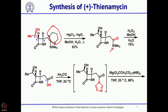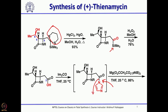Once the carboxylic acid was in hand, it was converted to the corresponding imidazole. Then an SN2 reaction with para-nitrobenzyl CO2CH2 was performed: the carbanion attacks the carbonyl and the imidazole leaves, giving the beta-ketoester. Essentially, this was done to prepare the precursor for introducing the diazo carbonyl, for which a beta-ketoester is required.